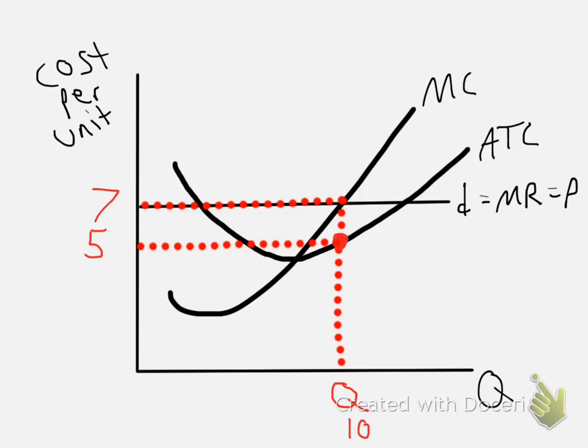Well, if it costs only $5 and they can sell it for $7, then they're going to make $2 on each unit that they sell. But their total profit will depend on how many units they're selling. So they're selling 10 units and they're making $20 total, because $2 is the difference between price and average total cost, and we multiply that by 10 units. So this green area here is our profit.